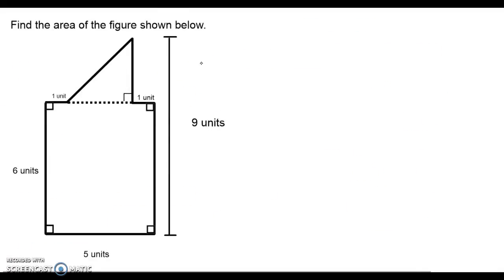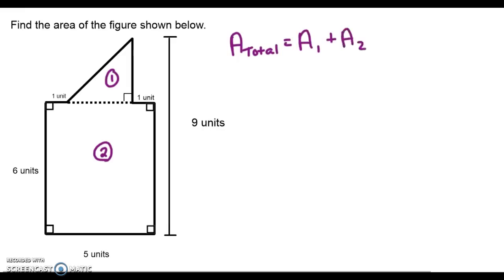In this second example, we'll find the area of the compound shape by breaking it up into a triangle and a rectangle. We'll call the triangle Shape 1 and the rectangle Shape 2. To find the total area of the compound shape, we're going to find the sum of the area of Shape 1, the triangle, and the area of Shape 2, the rectangle.